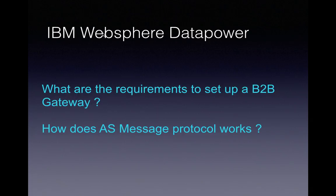What are the requirements to set up a B2B Gateway? You need to have an internal partner and an external partner. If the service transfers from the internal partner to the external partner, it is called outbound flow. If the flow is from the external partner to the internal partner, it is called inbound flow. You do not need to use B2B Gateway to exchange data between internal partners — that is not applicable.